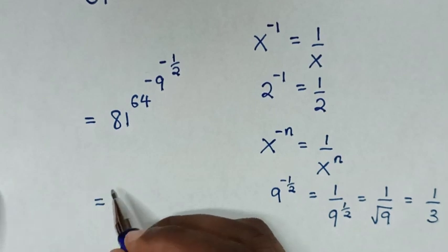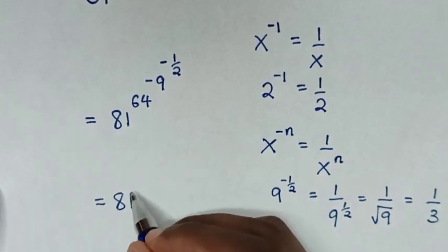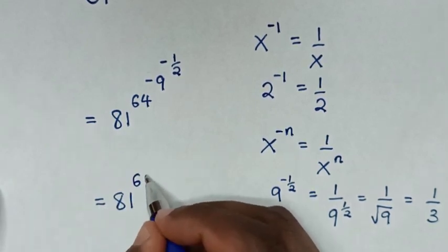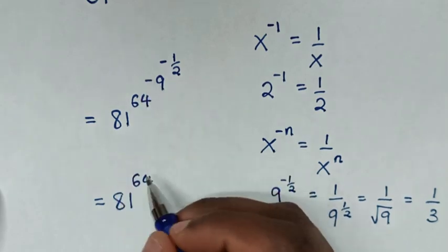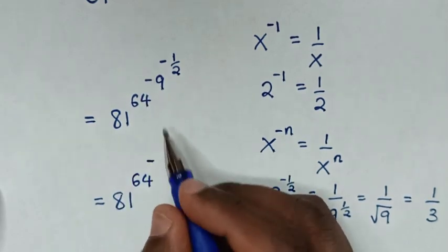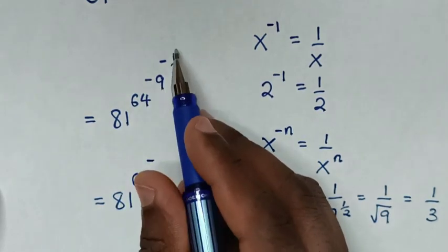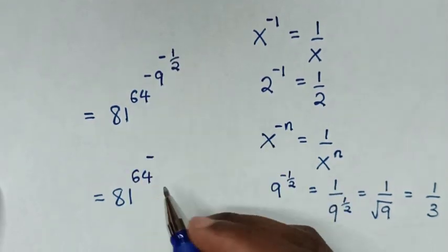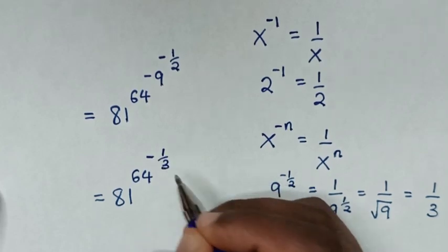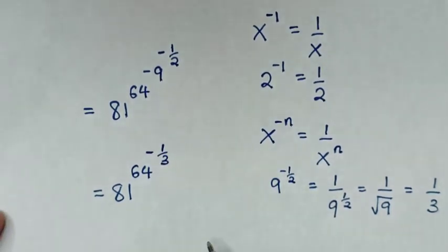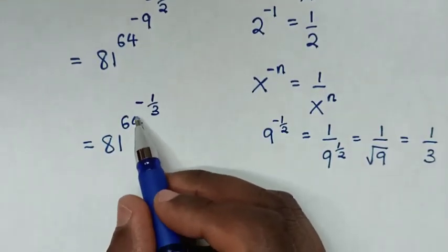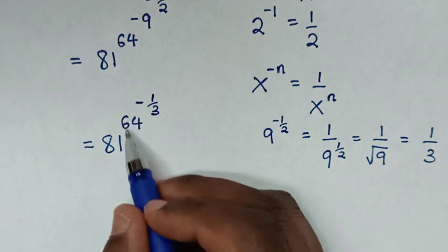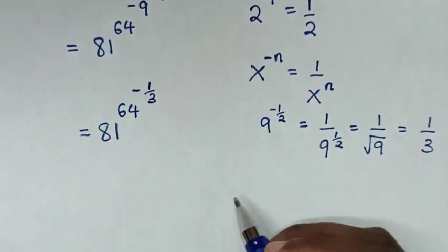So we substitute 1 over 3 into 9 power of negative a half. It will be equal to 81 power of 64 power of negative — we leave that behind — and 9 power of negative a half is 1 over 3. In the next step, we will deal with 64 power of negative 1 over 3.